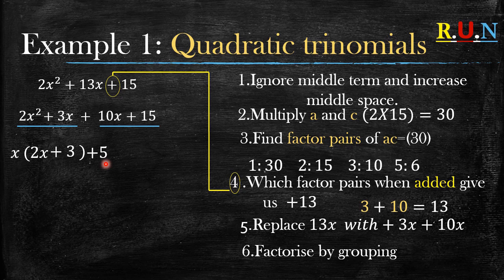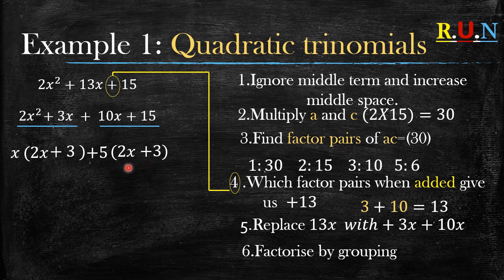The highest common factor of 10x and 15 is positive 5. So 10x divided by 5 gives 2x, and 15 divided by 5 gives positive 3. Now check: you have to make sure these two brackets are the same. If they are not the same, you've made a mistake somewhere and must restart.